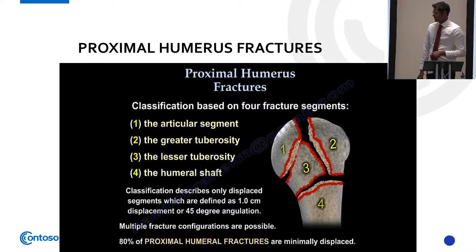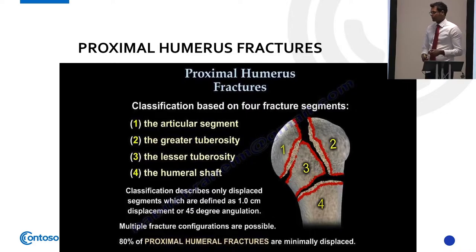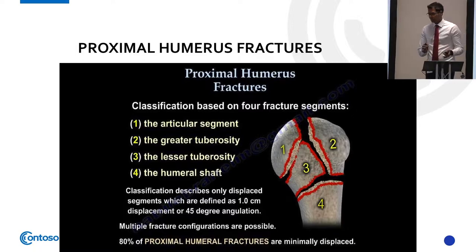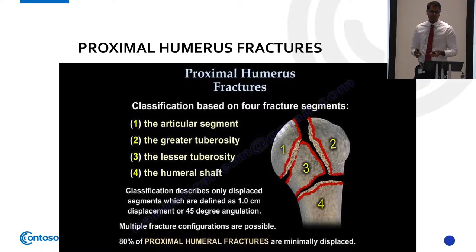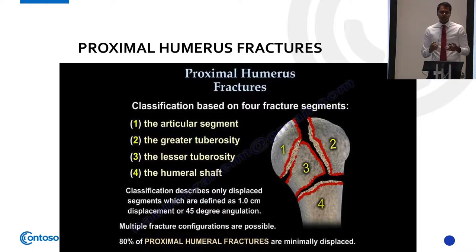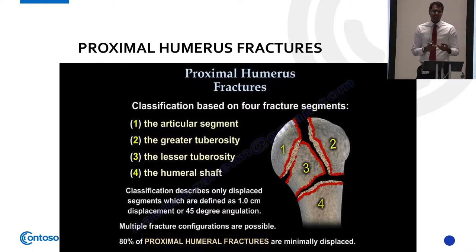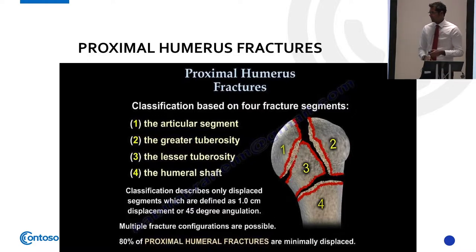It's the three or four part fractures that we get more worried about because the blood supply may be interrupted. These develop into three or four part fractures mainly due to the deforming forces around the shoulder — where the muscles and tendons are attached to the bone, they all pull in various directions causing the bone to split into various areas.